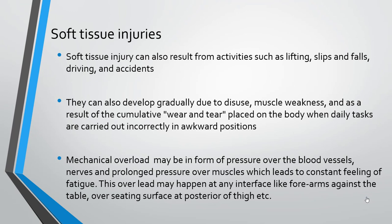Awkward positions cause buildup of extreme internal forces, compression of blood vessels, and ligament sprain. The resultants may occur after weeks, months or years on the job. Soft tissue injury can also result from activities such as lifting, slips and falls, or develop gradually due to disuse, muscle weakness, and cumulative wear and tear in awkward postures. Mechanical overload may be present as pressure over blood vessels and nerves, and prolonged pressure over muscles may lead to a constant feeling of fatigue — such as when sitting at the edge of a chair, compressing the posterior thigh for longer durations.